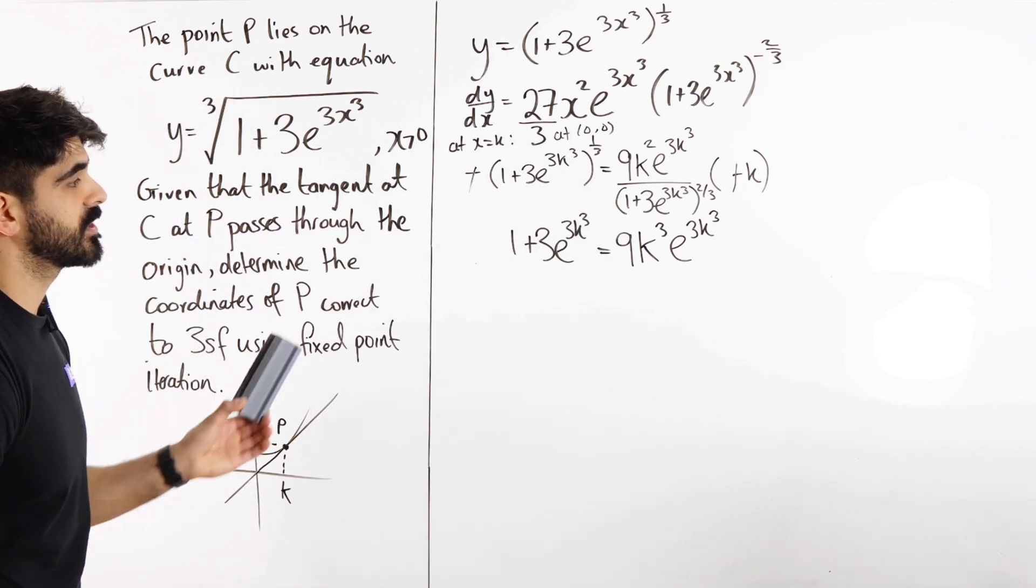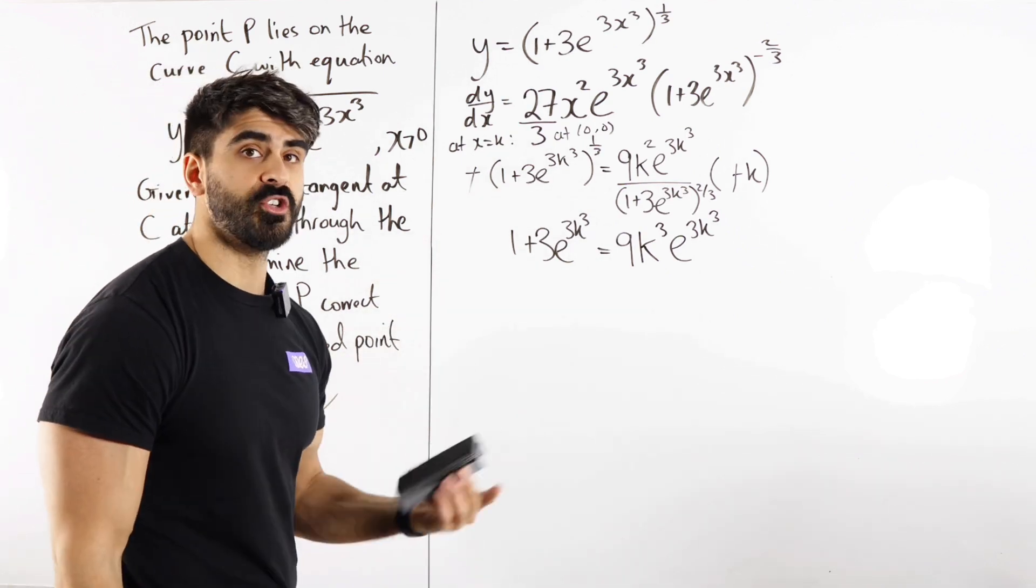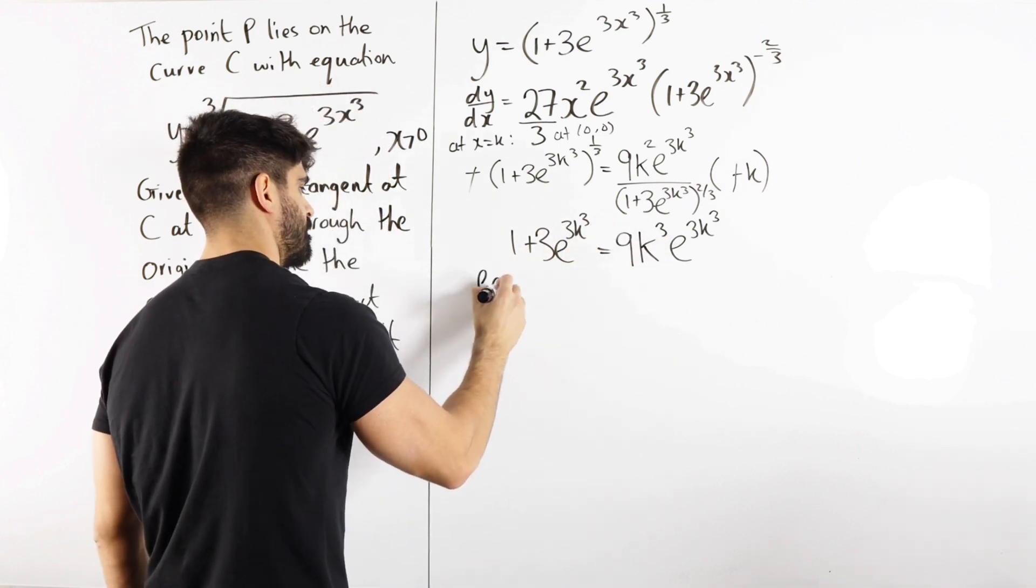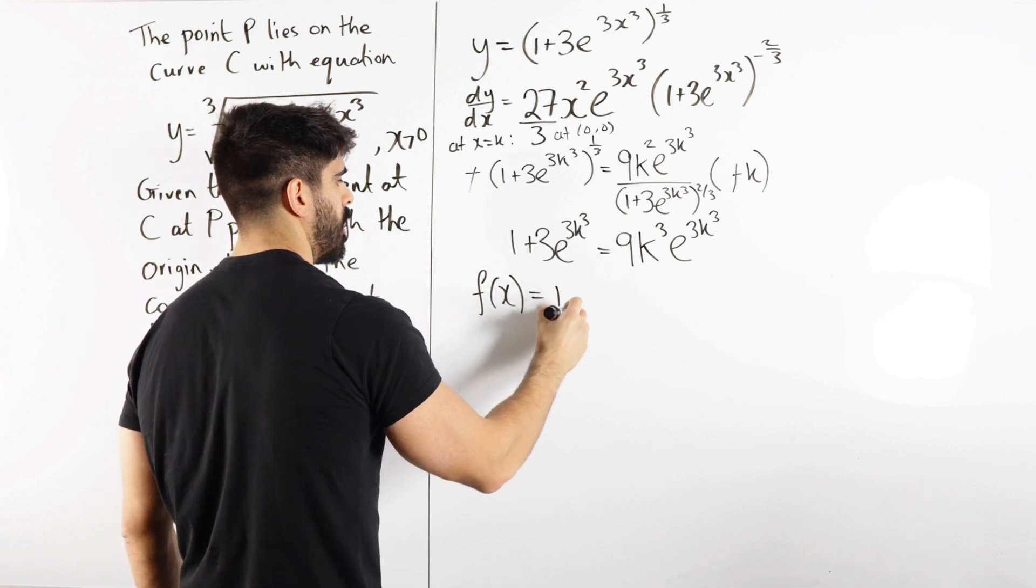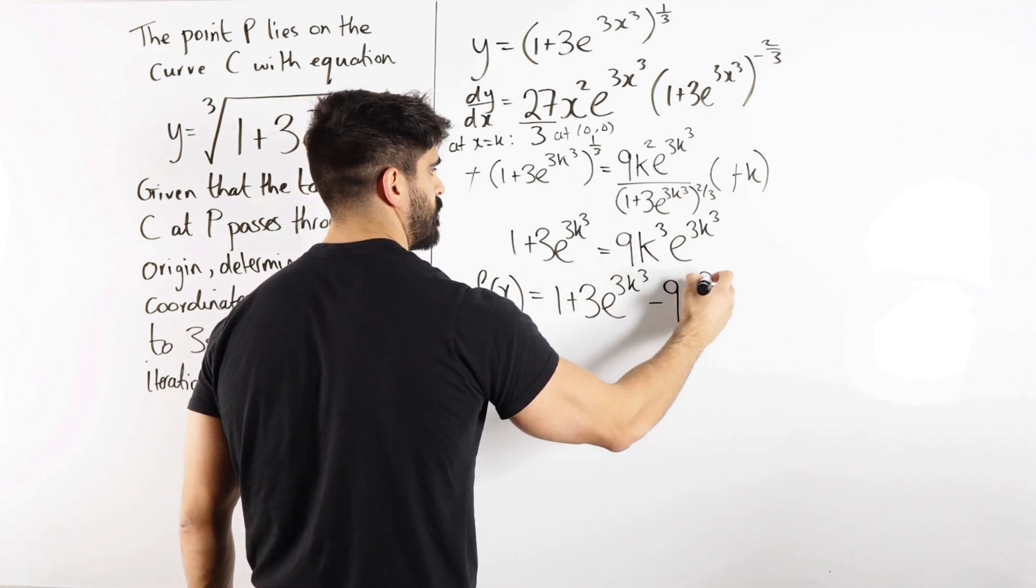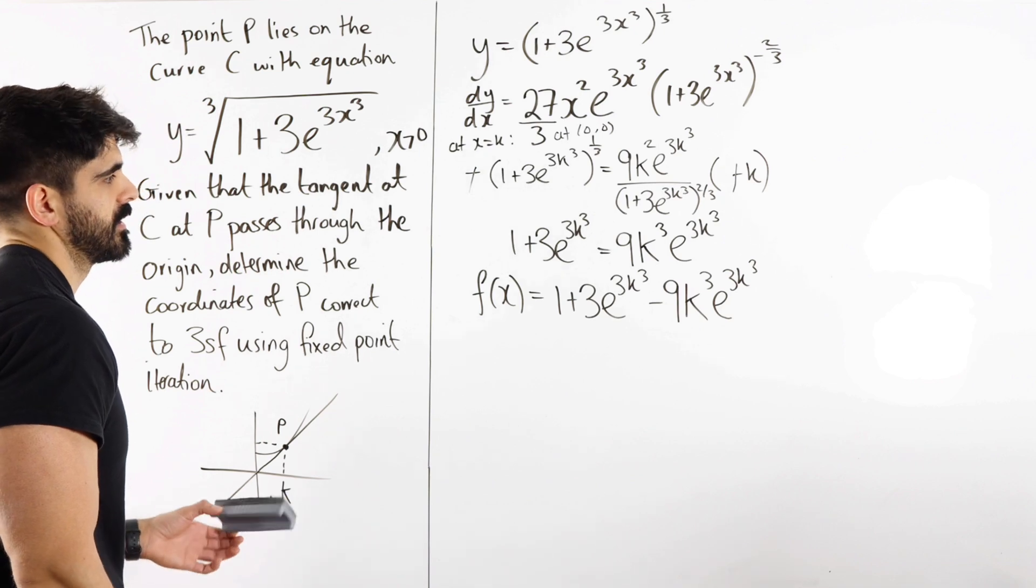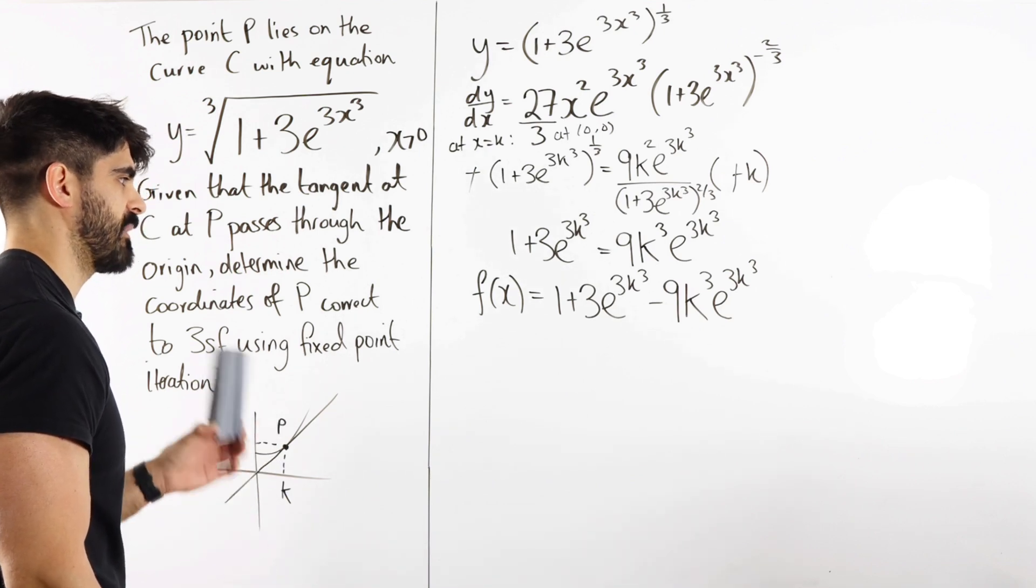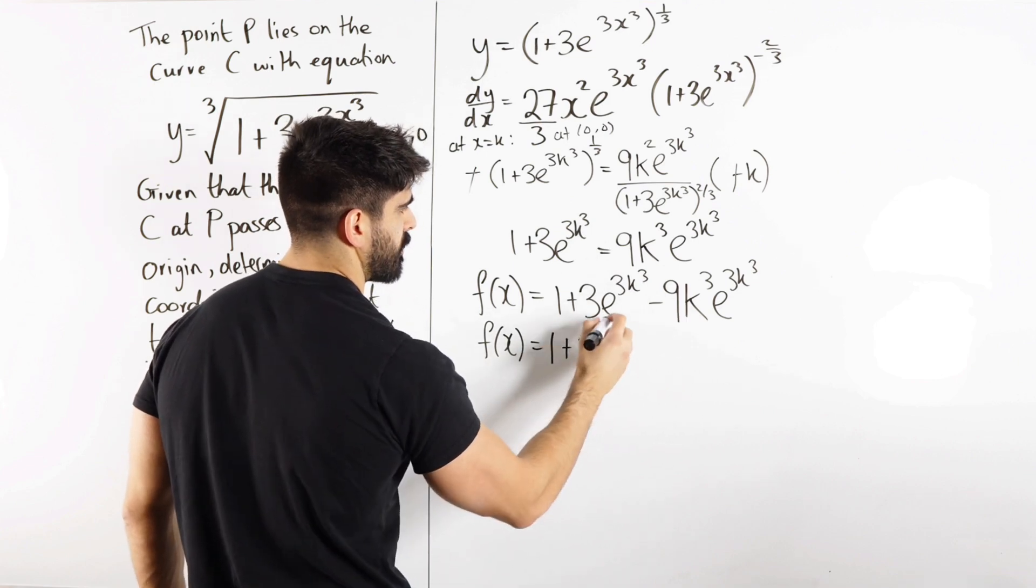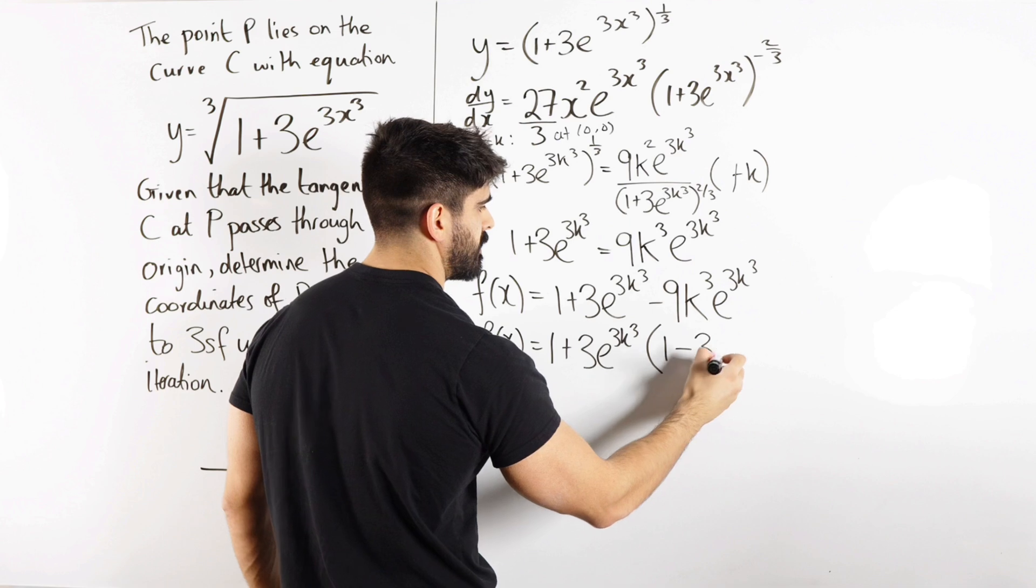So 9k squared times k would be 9k cubed e to the 3k cubed. Now they do want us to use an iterative method using fixed point iteration. Now fixed point iteration means to make it equal 0 and then use that as our function. So should we just move this to this side. So we're going to let f of k equal 1 plus 3e to 3k cubed minus 9k cubed e to 3k cubed. Is there a nicer function we could use here potentially I guess by factorizing. So f of x, this would be easier to then type in the calculator as 1 plus 3e to 3k cubed times 1 minus 3k cubed.